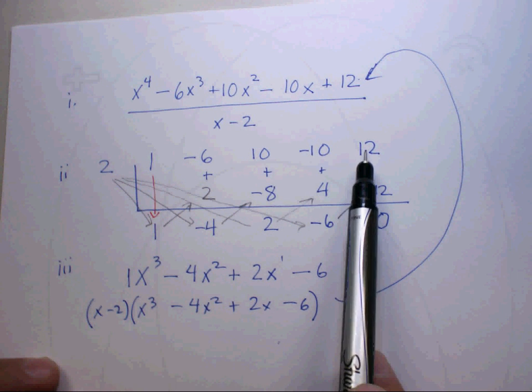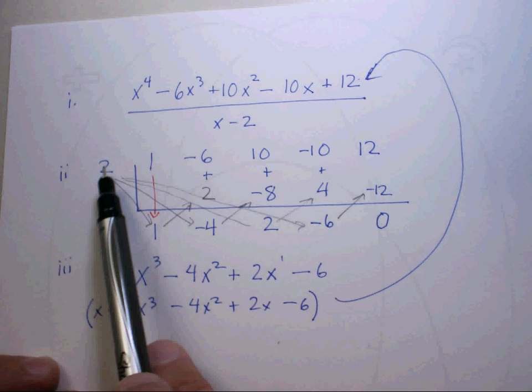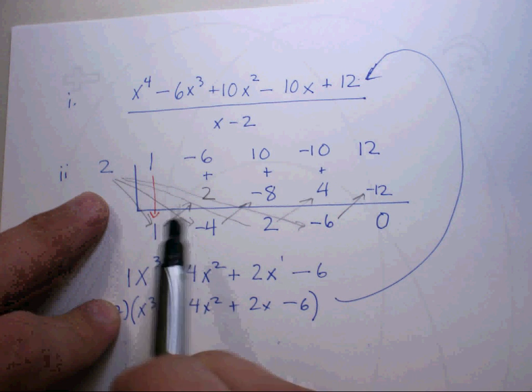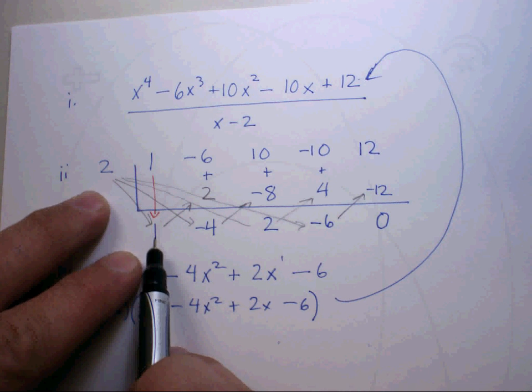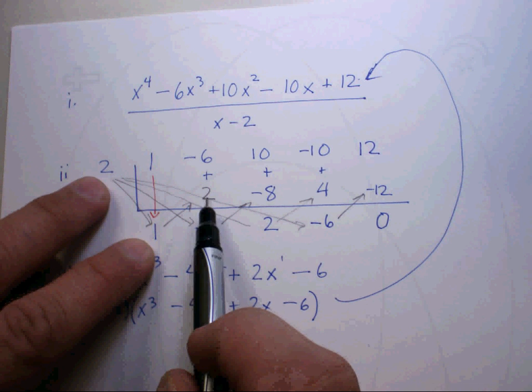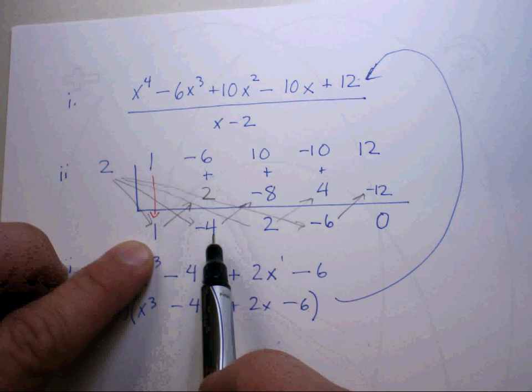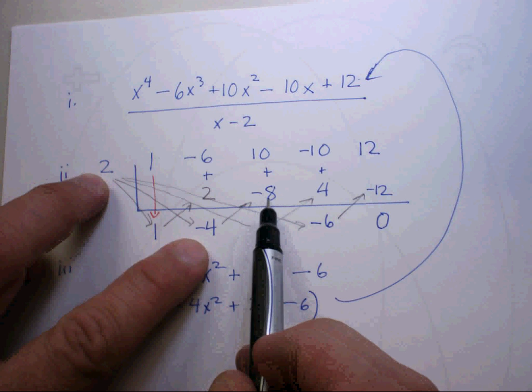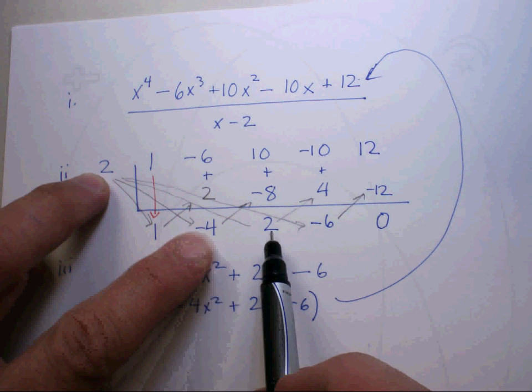Let me go over it one more time. Put everything in correct descending order. Use the coefficients, 1, negative 6, 10, negative 10, positive 12. Go to your denominator and ask yourself what will make it equal to 0. And the answer was 2, and that's what we're going to use out here. The first step is to bring down the leading coefficient.